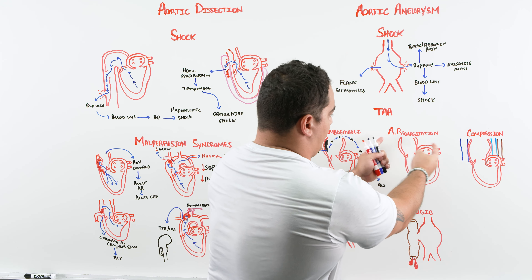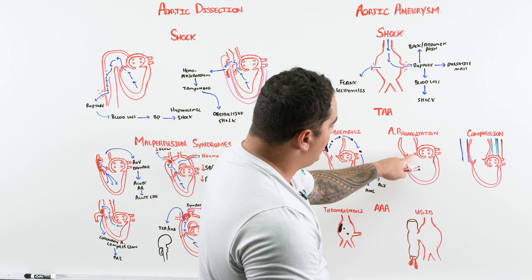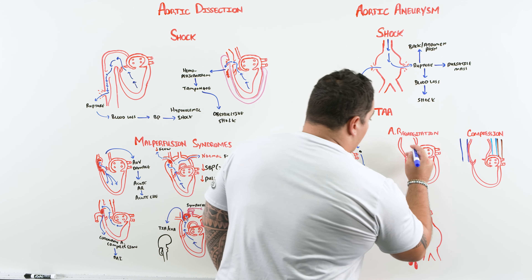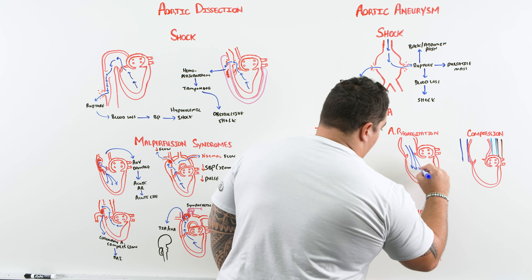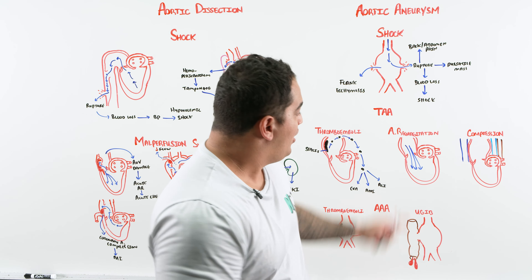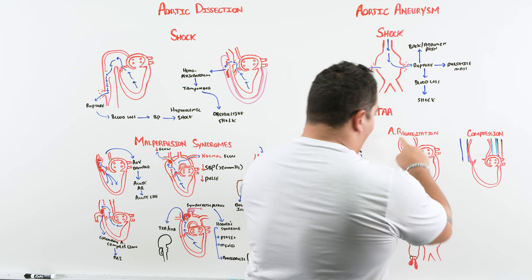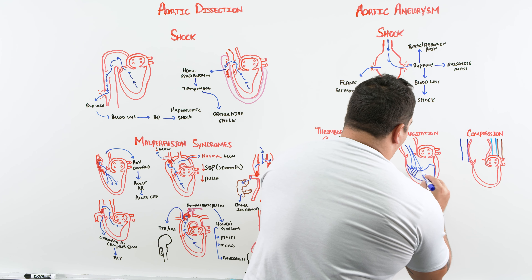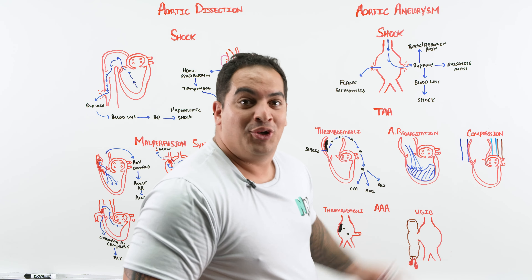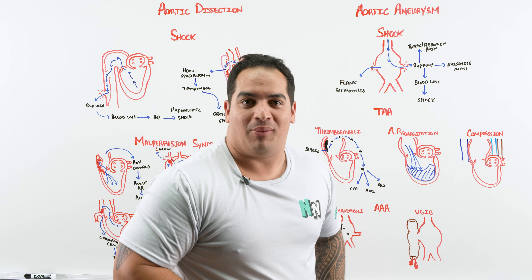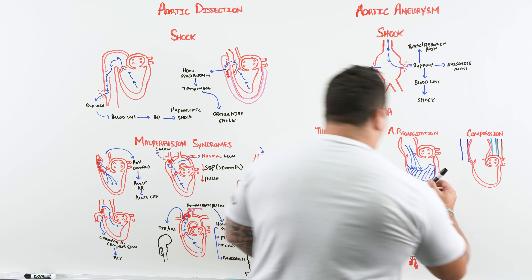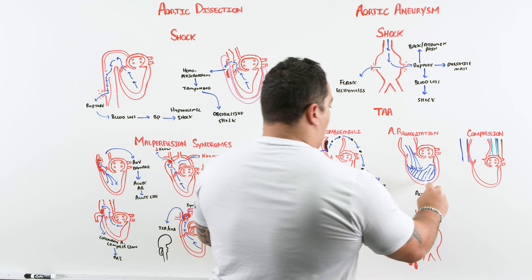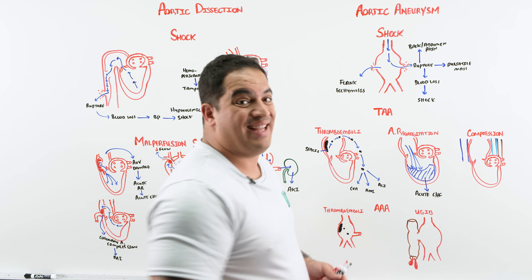Another major complication: the massive dilation of the ascending aorta prevents the aortic valve leaflets from co-apting properly. Blood rushes back into the heart causing aortic regurgitation. This leads to a low cardiac output and a heart filled with blood — resulting in acute heart failure from aortic regurgitation due to the ascending aortic aneurysm.